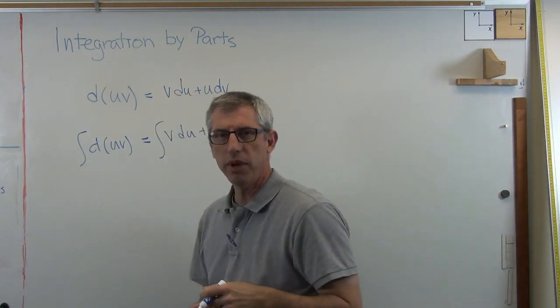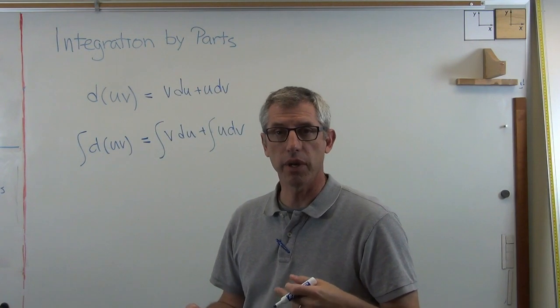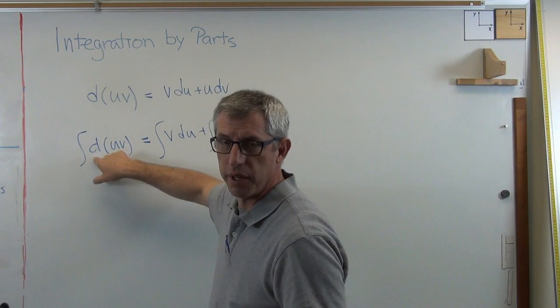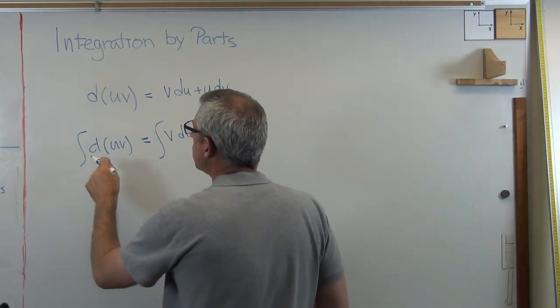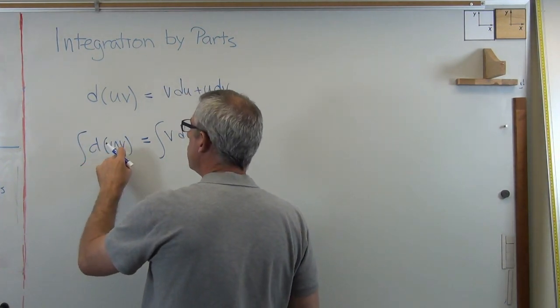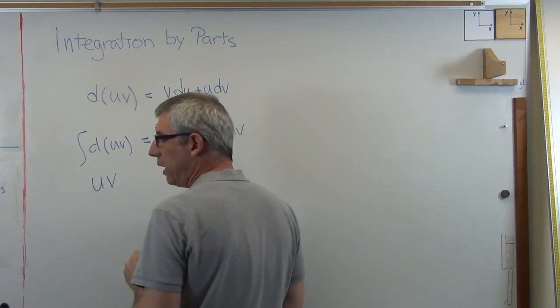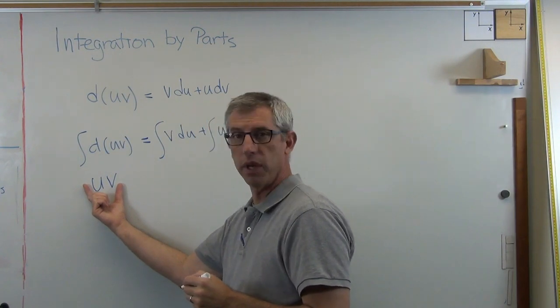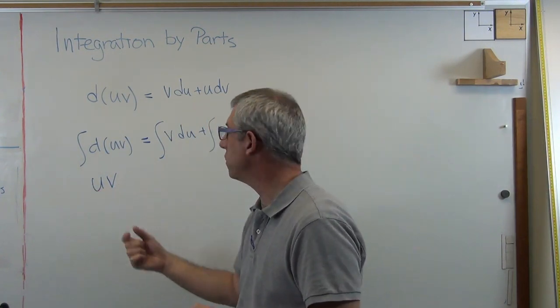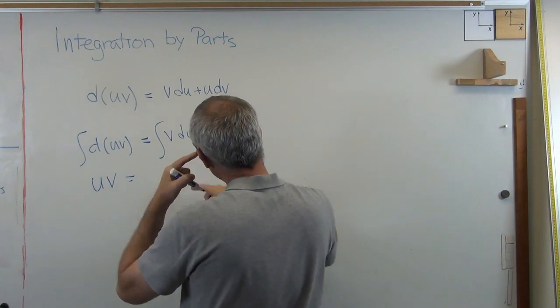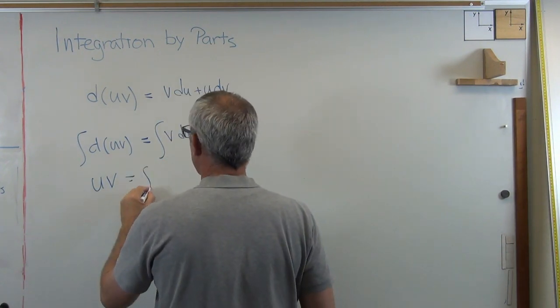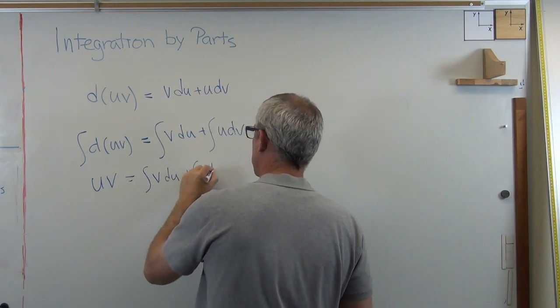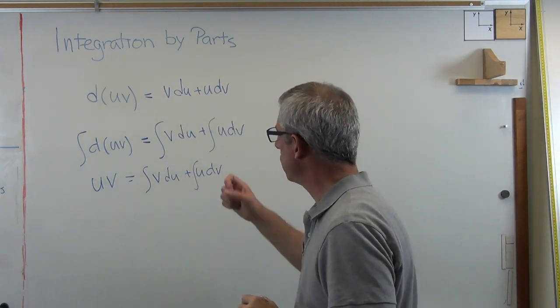Well, derivative and an integral are the opposite of one another, yes? So if I take the integral of a derivative or the derivative of an integral, either one, they cancel out. So the integral of the derivative of U V is just U V. U times V. Remember, this is just a function made out of two other, that's the product of two functions, U and V. Well, these I don't know what to do with yet. So I'm just going to leave them like they are.